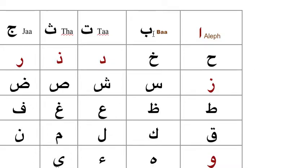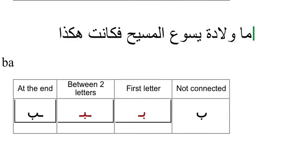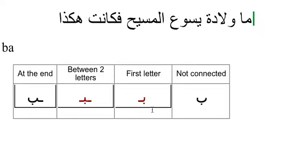In the class before, we talked about the letter BA and we showed you that this letter can be connected from both directions. This is how it's written in the beginning, and this is how it's written in the middle, and this is how it's written at the end.